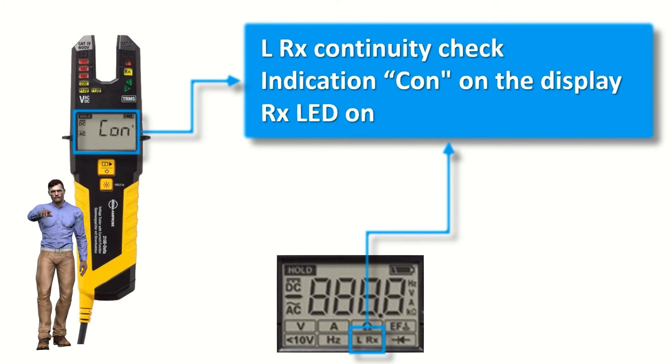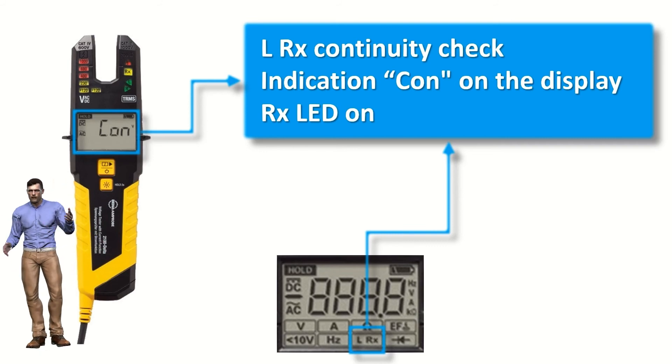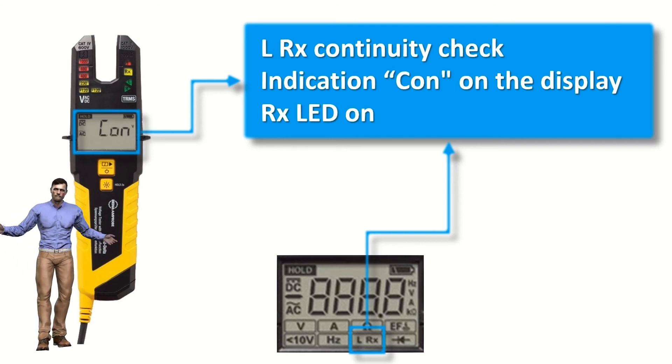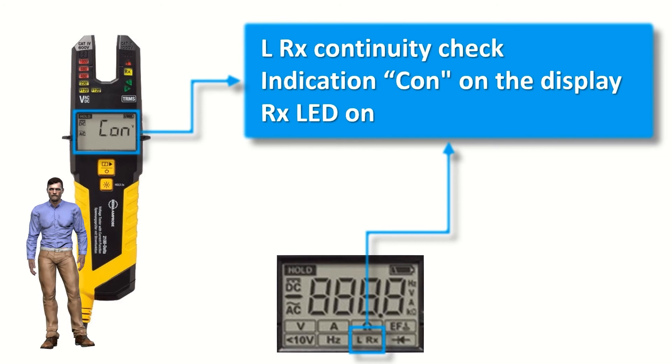And to further facilitate the continuity verification, the next function that we can select is the so-called LRX, which for resistance lower than 20 ohms on the display will appear the indication con, for continuity, to show continuity in a simpler way.